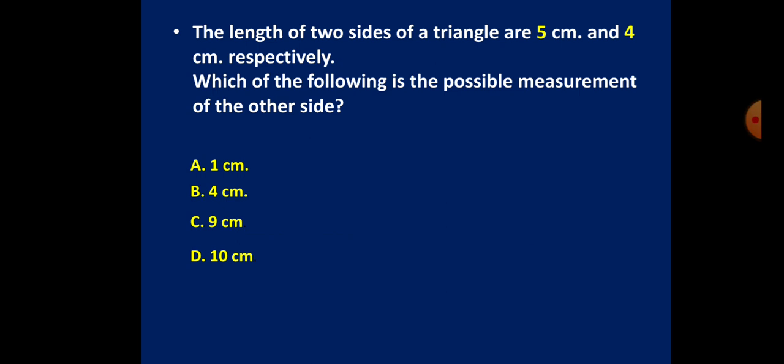If you add up two sides of a triangle, it must be bigger than the third side. Our given sides are 5 cm and 4 cm. Five plus four is 9, so the third side must be less than 9. Therefore 10 cm is ruled out. Nine centimeters also cannot be the answer, because 5 plus 4 equals 9, and 9 is not greater than 9.